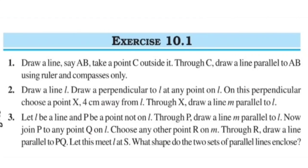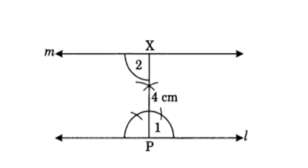Now see Question 2: Draw a line L, draw a perpendicular to L at any point on L. On this perpendicular choose a point X, 4 centimeters away from L. Through X draw a line M parallel to L. See the steps: first draw a line L, then take any point P on it.